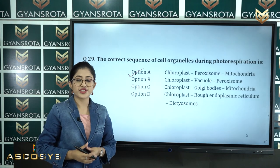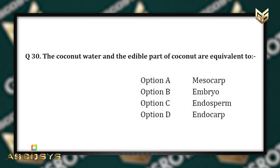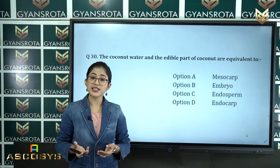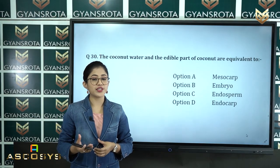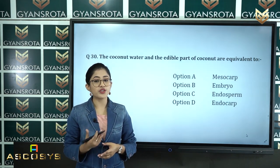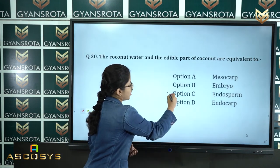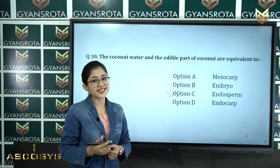Question number 30: The coconut water and the edible part of coconut are equivalent to endosperm, which is option C. So option C is the correct answer.